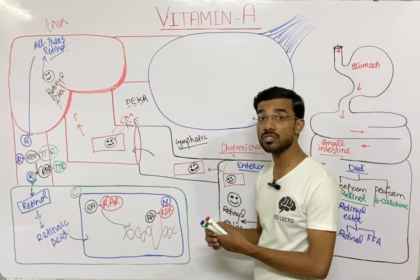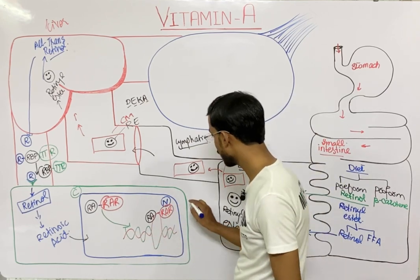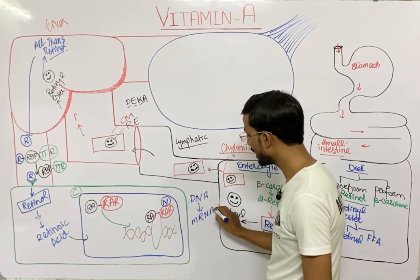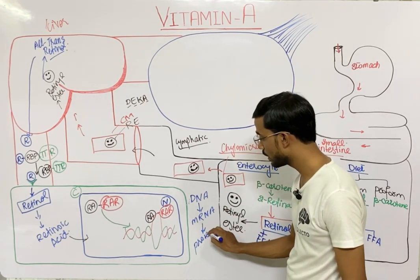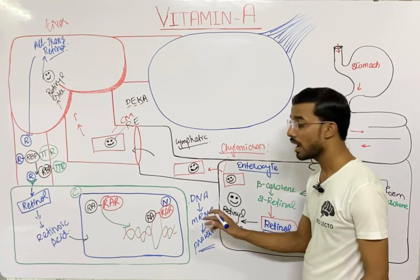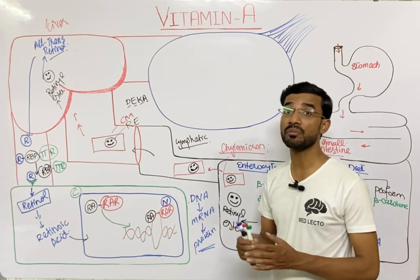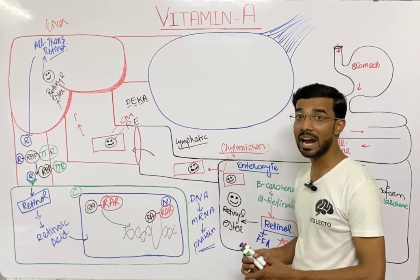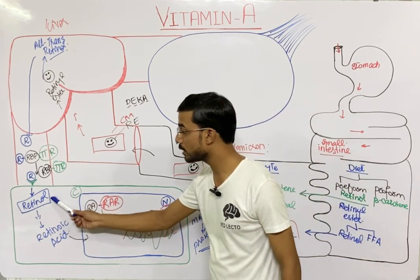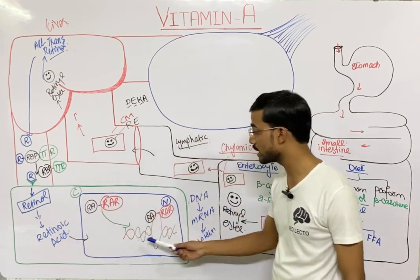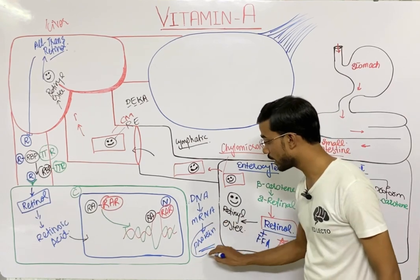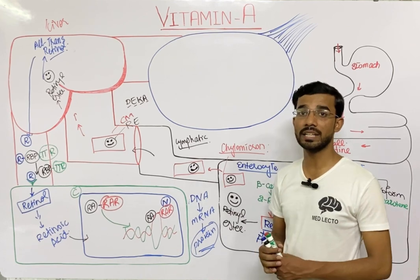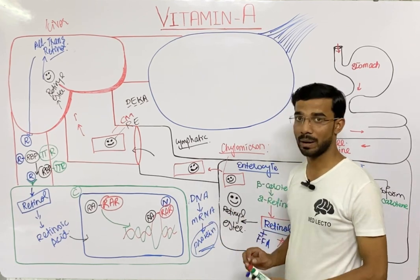In transcription, messenger RNA is synthesized from DNA, and after that different proteins are formed that regulate the process of differentiation in epithelial cells. So ultimately, Vitamin A as retinoic acid regulates protein formation, especially in epithelial tissues.